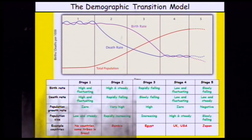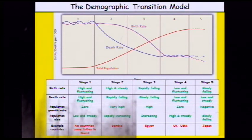This is an image of the demographic transition model. It shows how the birth rate, death rate and total population change across five different stages. Taking the birth rate first: in stage one, it is high and fluctuating — meaning it's going up and down quite quickly. In stage two, the birth rate continues to be high. In stage three, it starts to fall. In stage four, it is low and fluctuating before decreasing in stage five.